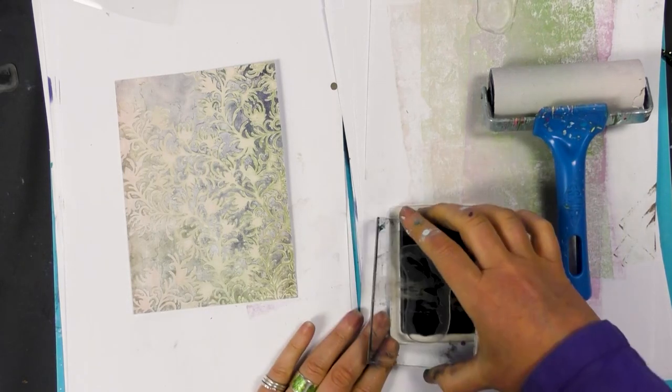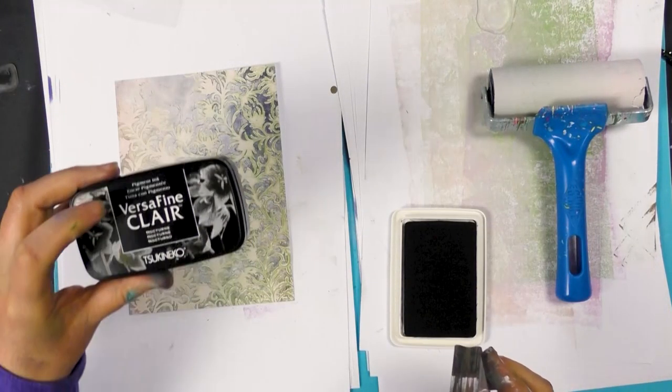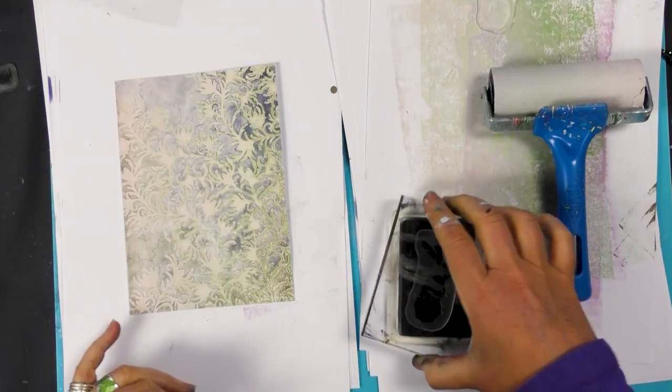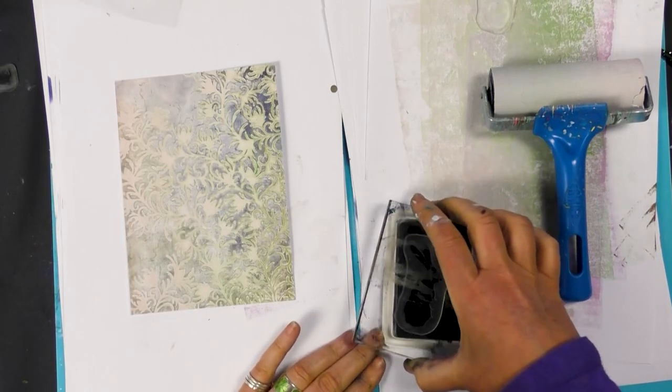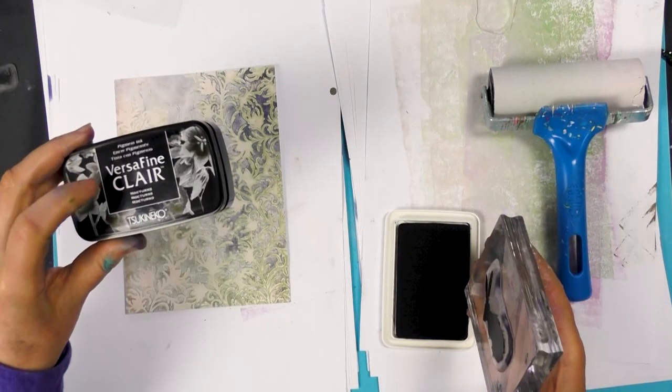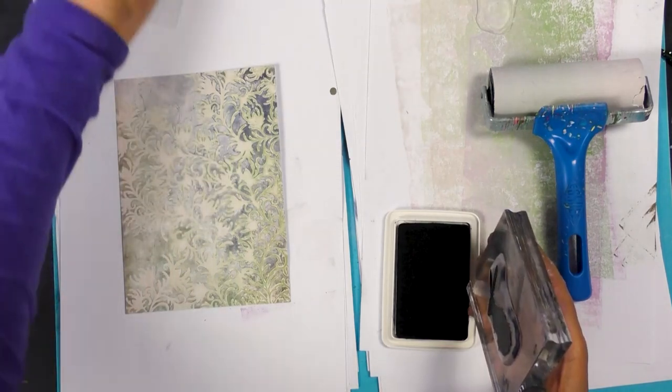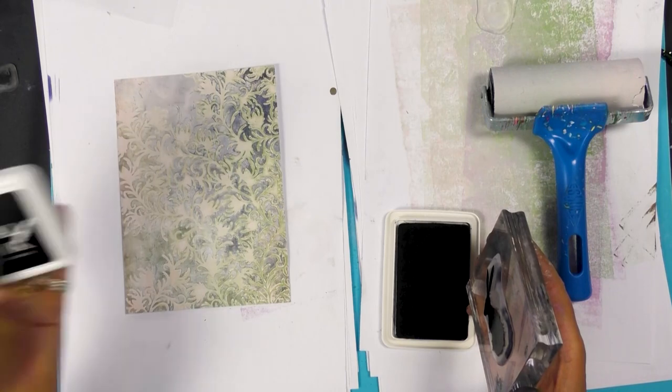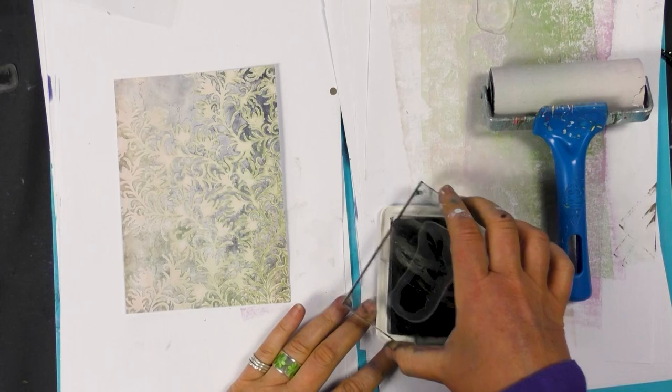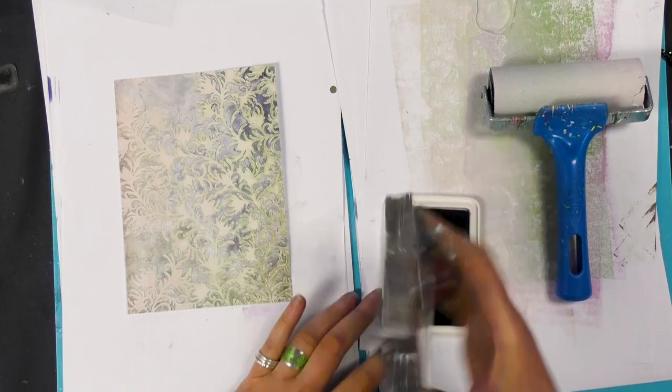So as I said before I always use Versafine on all my stamping projects, however on the acrylic paints and the Yupo, it's quite a hard ink to stamp onto, it just doesn't come out too well whereas the archival on the acrylic paints and the Yupo it stamps superb. So it just goes to show you not all inks are suitable for all cards.